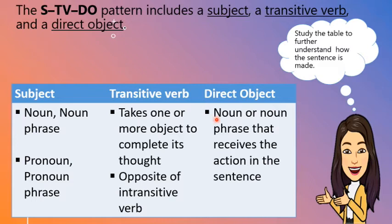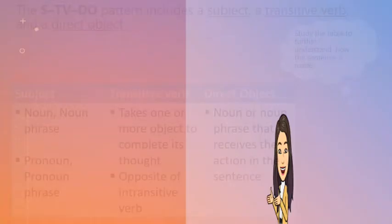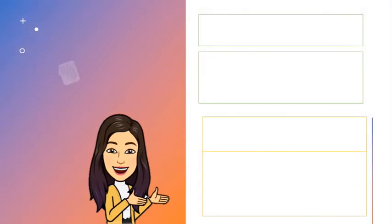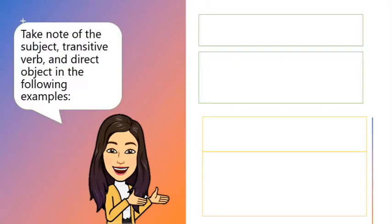The direct object can be a noun or a noun phrase that receives the action in the sentence. Take note of the subject, transitive verb, and direct object in the following examples.